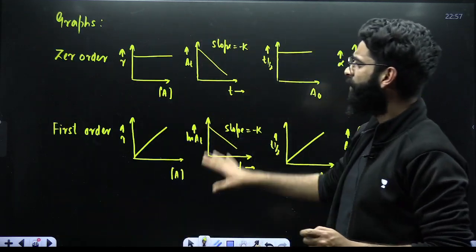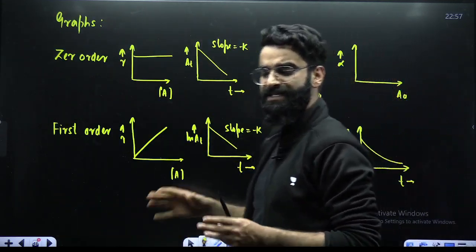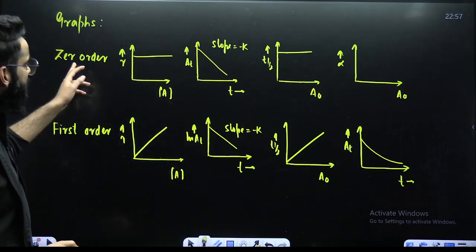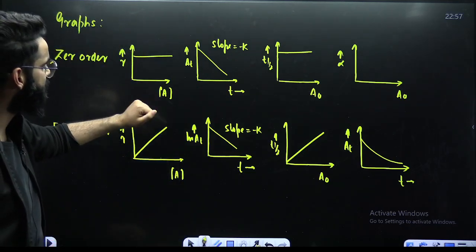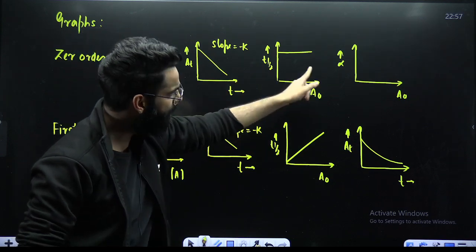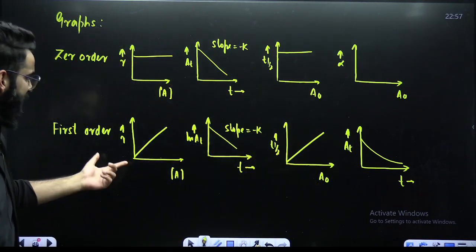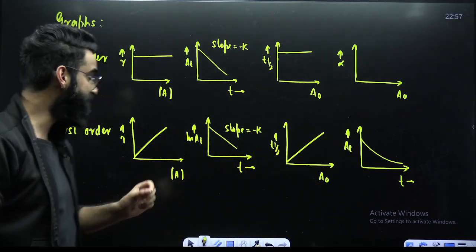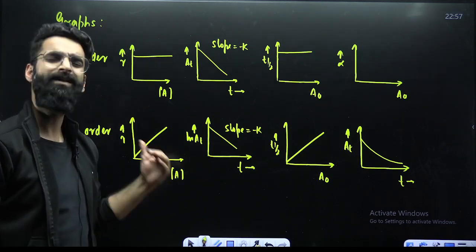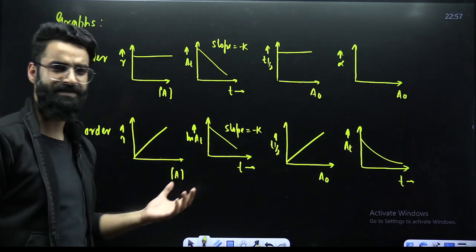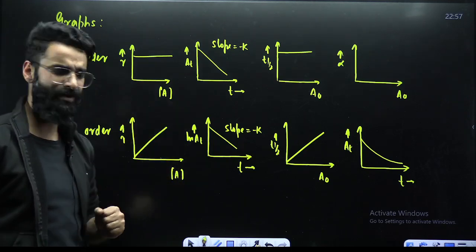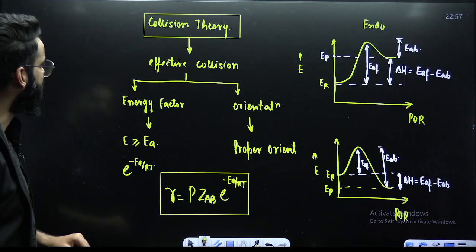There are graphs related to both zero-order and first-order kinetics you should remember. For zero-order: rate versus concentration, A_T versus T, T half versus A_0, and alpha versus A_0. For first-order, there are corresponding graphs you should know, because questions are frequently asked from graphs, and by means of these graphs you can identify which reaction is zero-order and which is first-order.